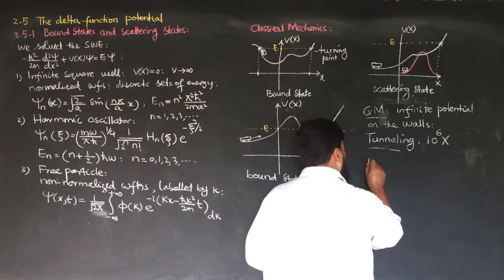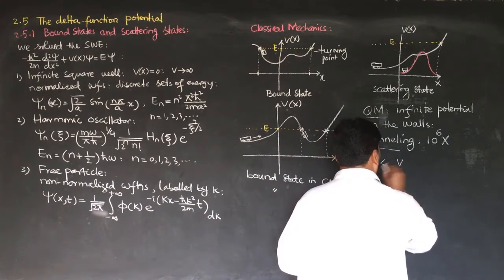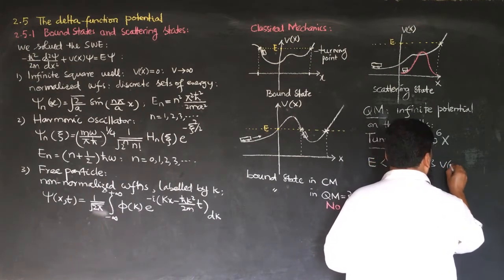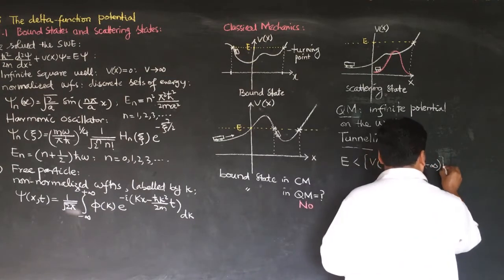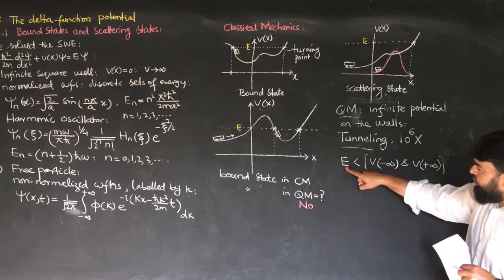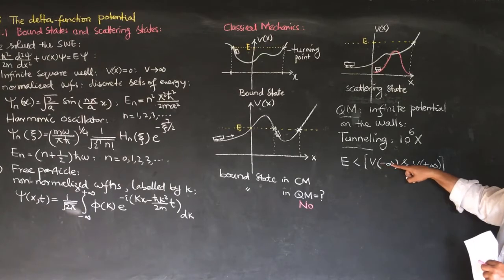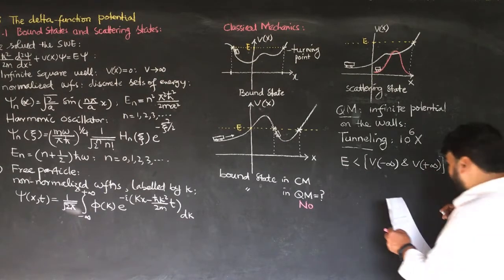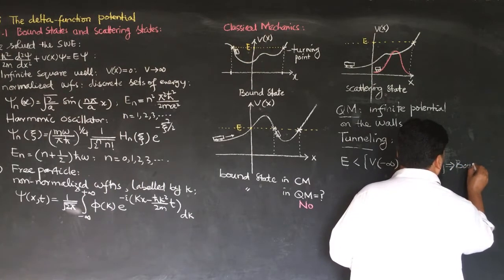To summarize: if E is less than V, such that V at minus infinity and V at plus infinity are both infinite — meaning the potential energy at both ends is infinite — then the system will have a bound state.